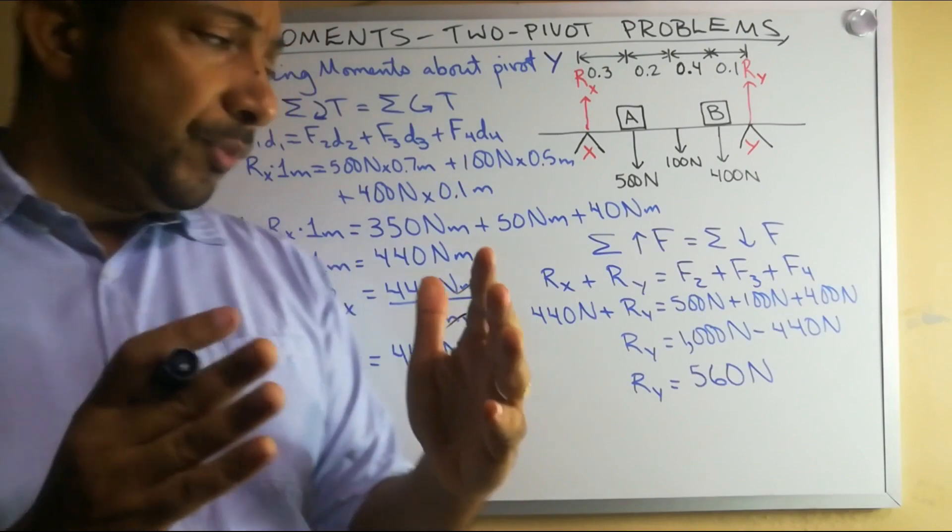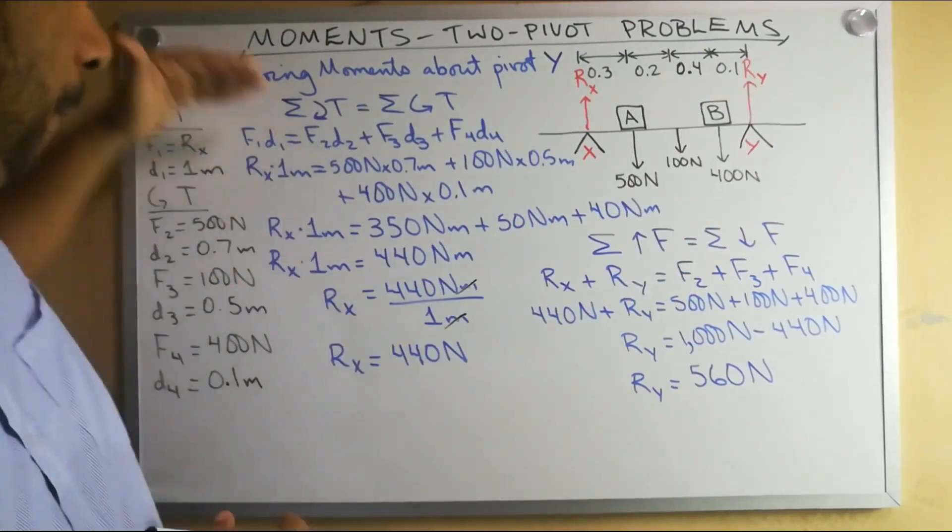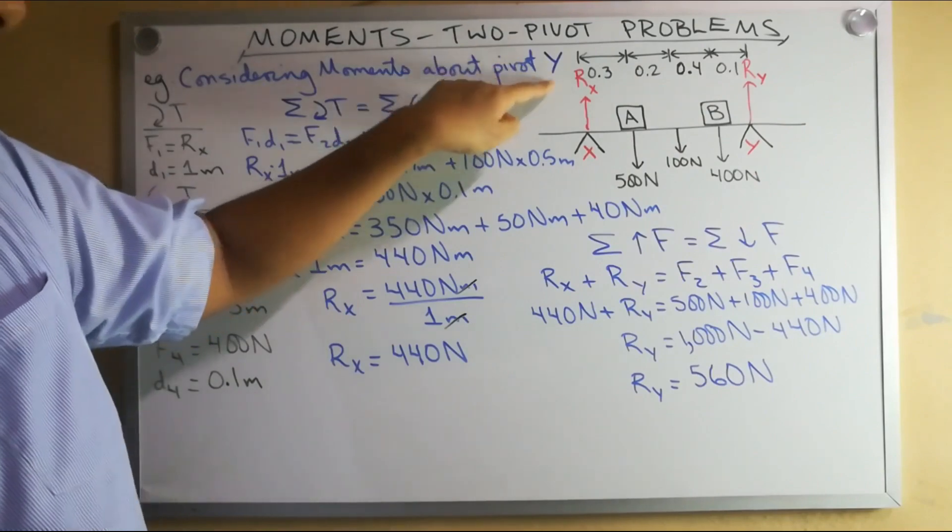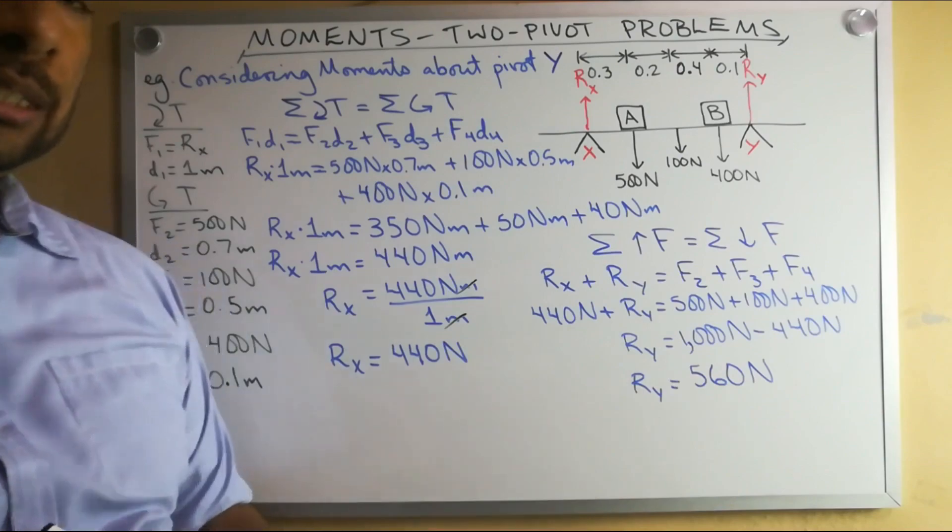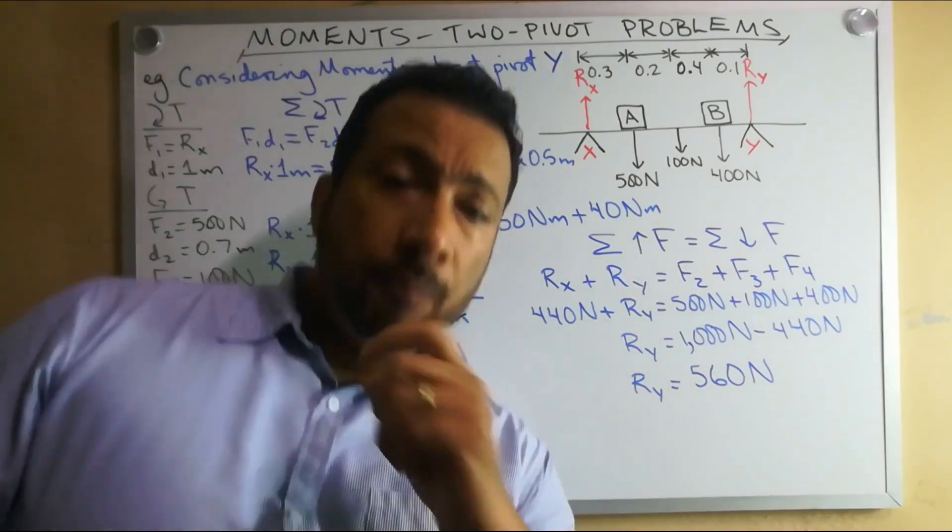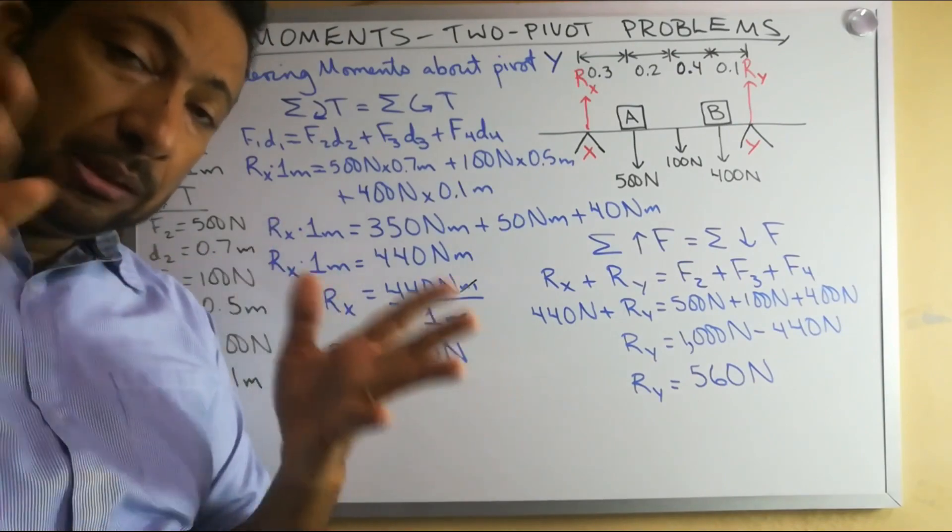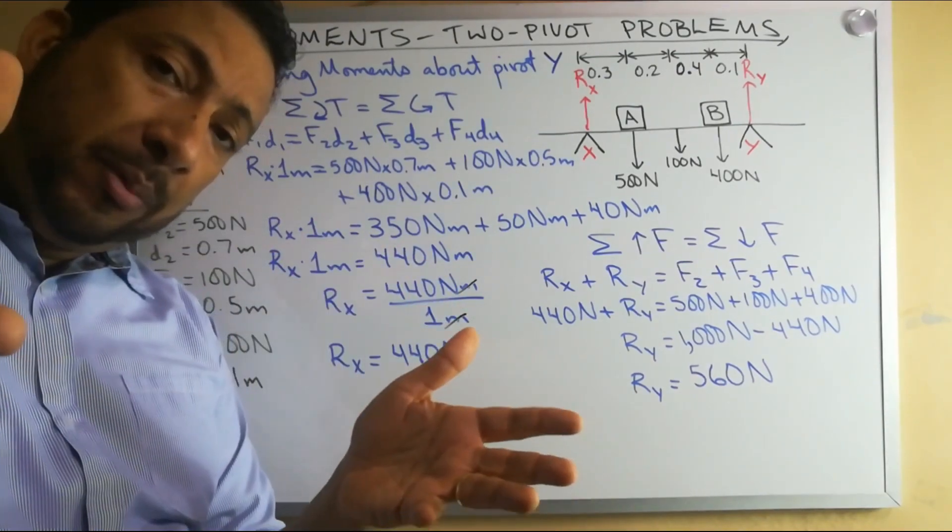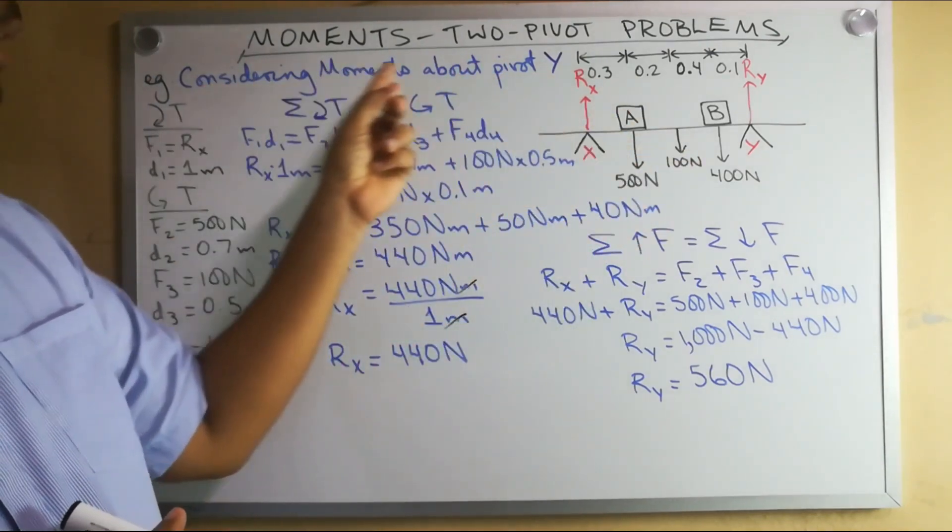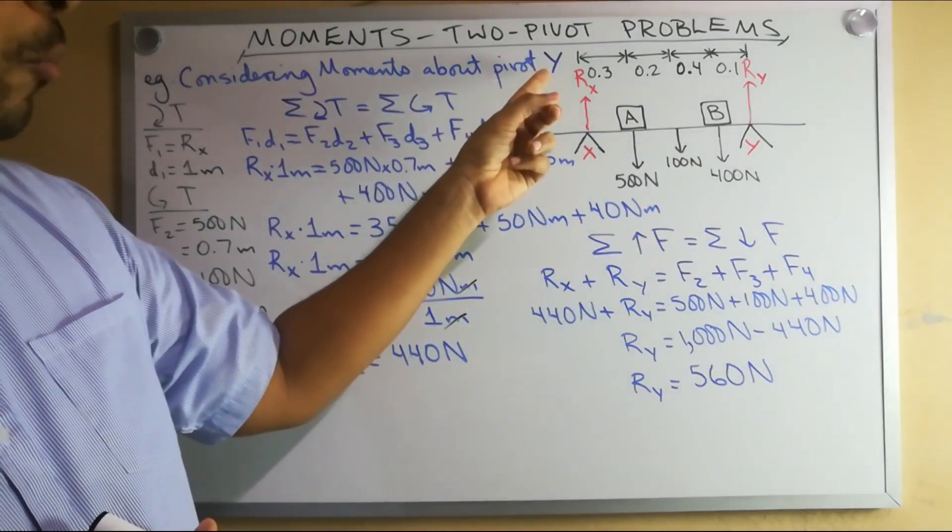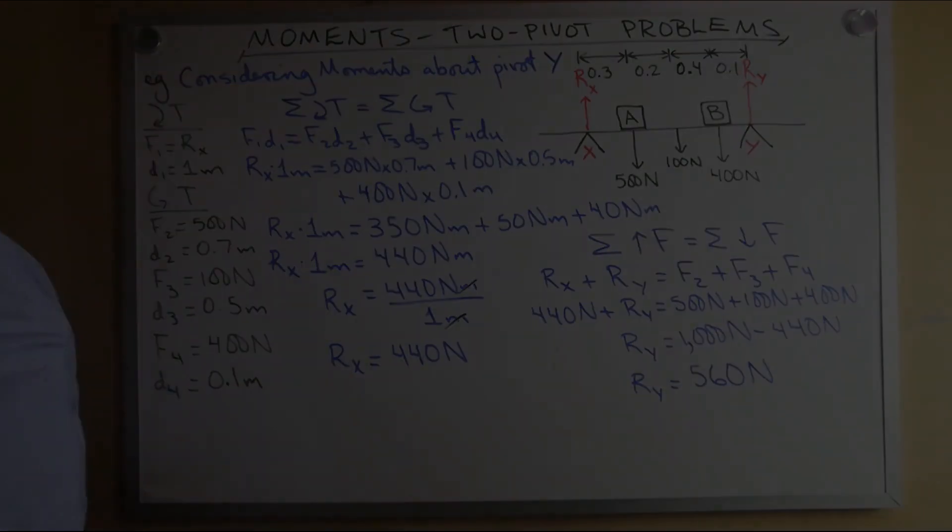And like I said, if you were to find the value of R sub Y by considering moments about pivot X, following these steps here, you will get the same answer of 560 Newtons. I want to leave it to you to practice on that. What I mean is, your extra practice problem is to find for this example the value of R sub Y by considering moments about pivot X.